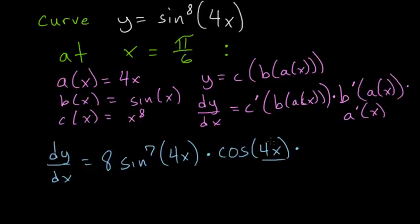the innermost function, this 4x. And since this is x to the 1st, we bring the 1 down and subtract 1 from the exponent, so we're left with x to the 0, which is 1. So we'll just multiply by 4.